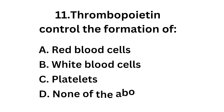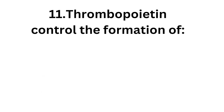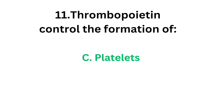Question number eleven: thromboplastin controls the formation of — option A red blood cells, option B white blood cells, option C platelets, option D none of the above. The correct answer is option C, platelets.